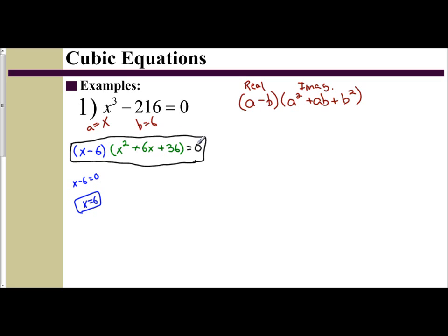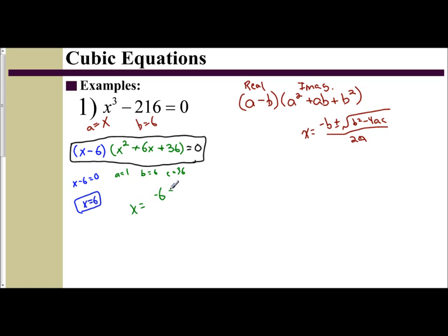The harder one to solve for is your imaginary, because we're going to have to use the quadratic formula: x equals negative B plus or minus the square root of B squared minus 4AC all over 2A. Our A here is 1, our B is 6, and our C is 36. So I have x equals negative 6 plus or minus the square root of 6 squared minus 4 times 1 times 36, all over 2 times 1.